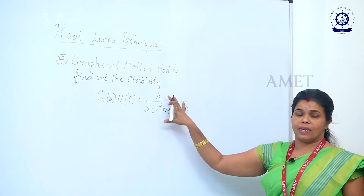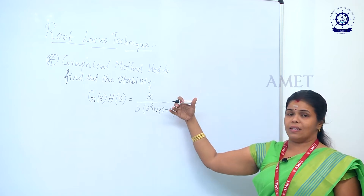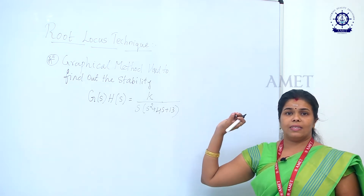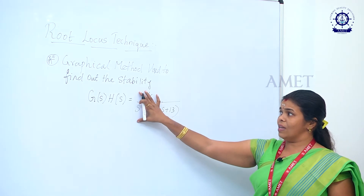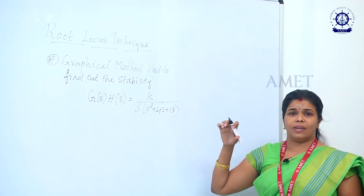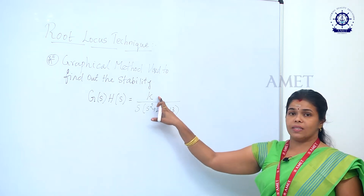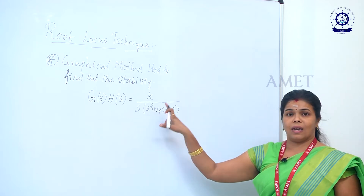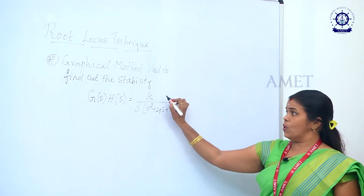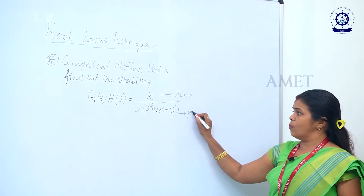We are going to apply the root locus technique to this equation. There are various steps in the root locus technique which we must follow to arrive at the stability of the system. The open loop transfer function contains the denominator term and the numerator term. The denominator term tells us the number of poles present in the system, and the numerator term tells us the zeros.